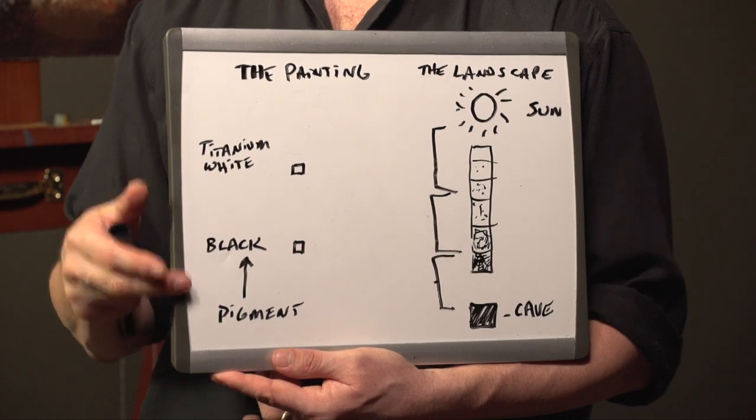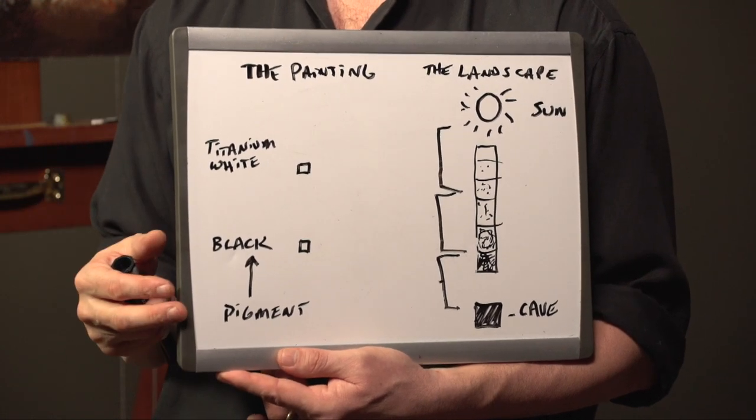On a painting, we have to lock into a defined value system that isn't dependent on the changing pupils. Therefore, we have a value system that's graded between 0 and 10. Now this is the discrepancy — on a painting, we have to really compress the values that we find in nature.